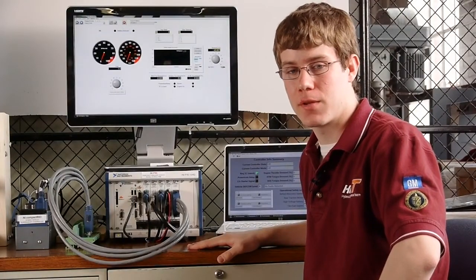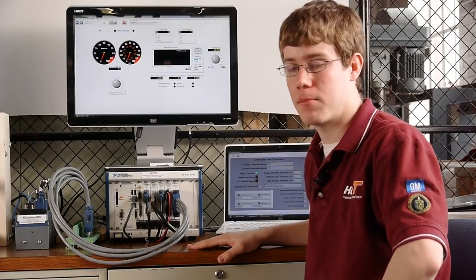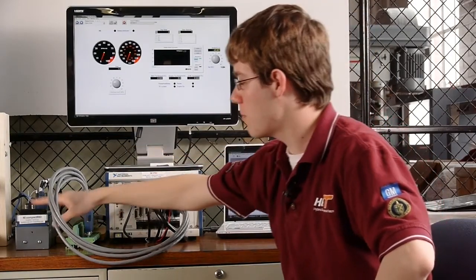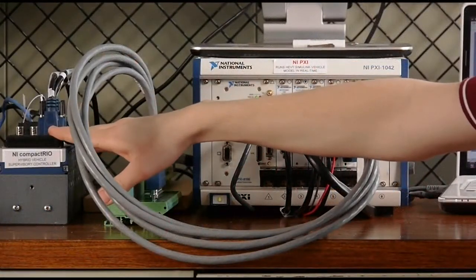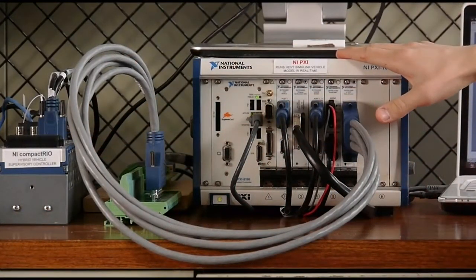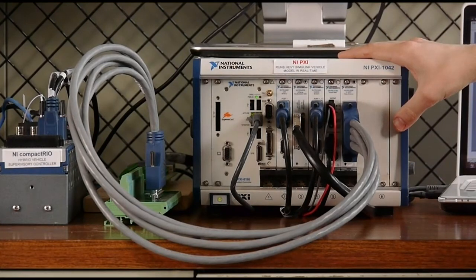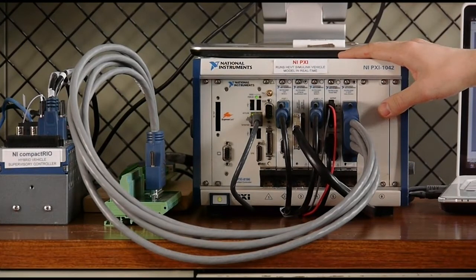Our controller Hardware in the Loop setup uses a vehicle model running in real-time on our National Instruments PXI chassis, and that is interfaced with our CompactRIO, which is running our control code. Our control code is only interfaced with the PXI chassis through two CAN connections and analog signals. With this setup, our control strategy does not know whether it's talking to the actual vehicle or to the vehicle model.